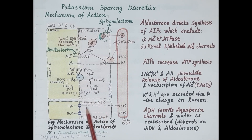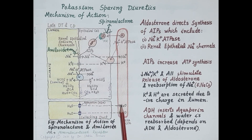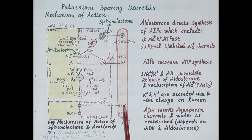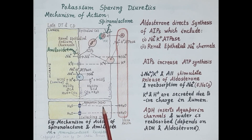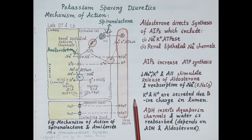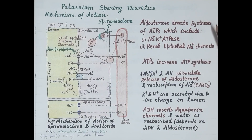Antidiuretic hormone regulates the reabsorption of water by inserting aquaporin channels or water channels in the collecting duct. Water is reabsorbed from the filtrate into the blood provided that sodium is reabsorbed. Reabsorption of water is thus tightly regulated by both antidiuretic hormone and aldosterone.